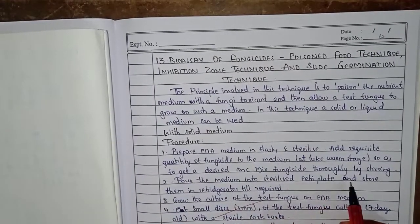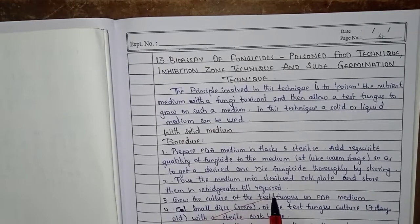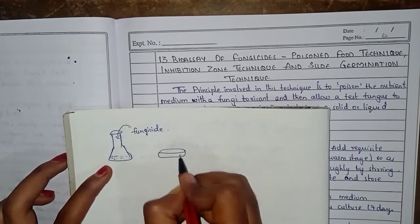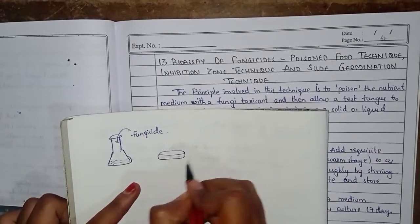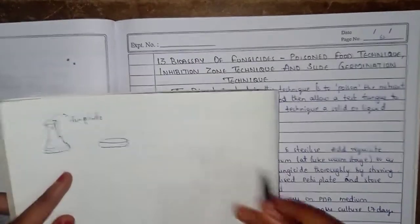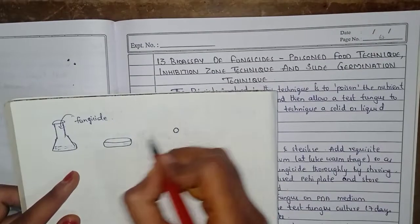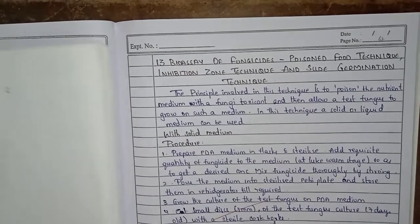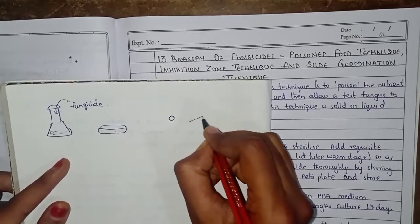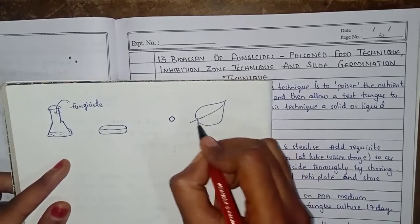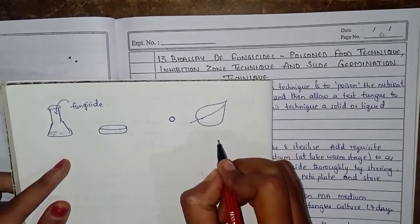Pour the media into sterilized petri plates and store them in the refrigerator until required. Grow the culture of the test fungus on PDA media. Then, using a cork borer instrument, cut a disc shape from the culture.